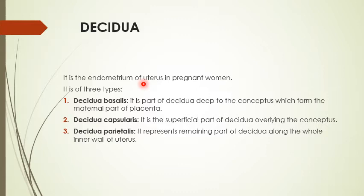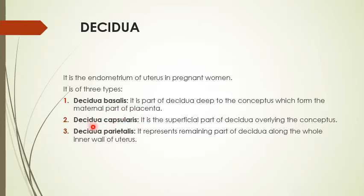In the rest of the uterine cavity, apart from the fundus and posterior wall, the endometrium also undergoes proliferation but not as marked as those stated sites. The thick endometrium in the posterior wall and fundus midline is named decidua basalis. It is the part of the decidua deep to the conceptus where the blastocyst beds, which forms the maternal part of the placenta.